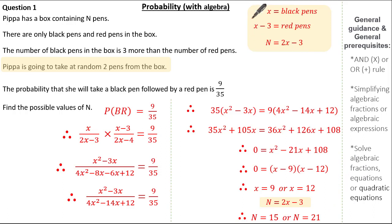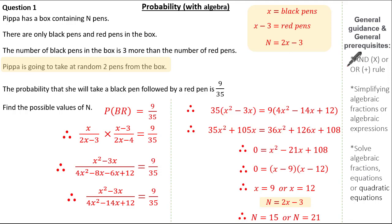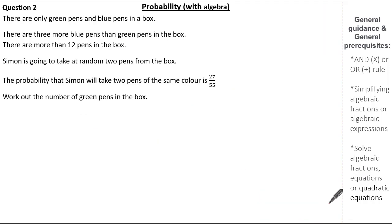These are tough questions but the process is generally the same: identify your unknown correctly depending on the question; always read the question and identify whether you have dependent or independent events; and remember how important it is to have that prerequisite knowledge of the AND or OR rule, simplifying algebraic fractions and expressions, and solving algebraic equations or quadratic equations. So let's move on to the second exam question.